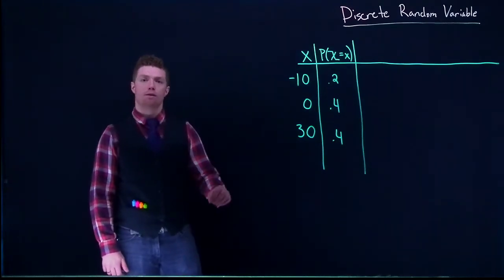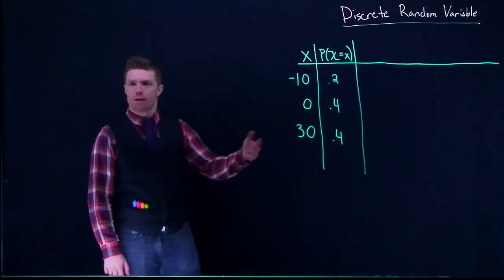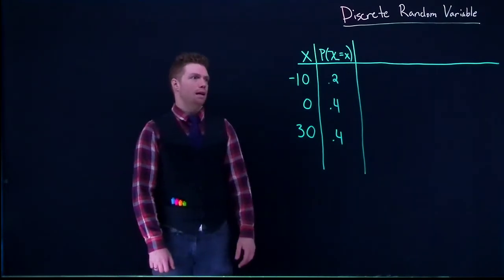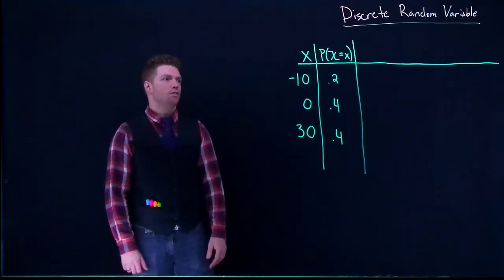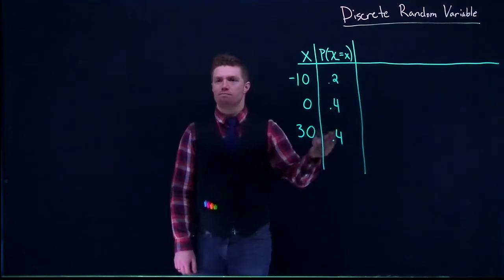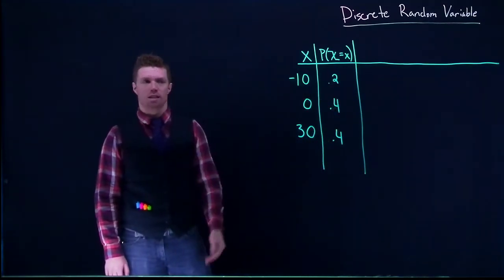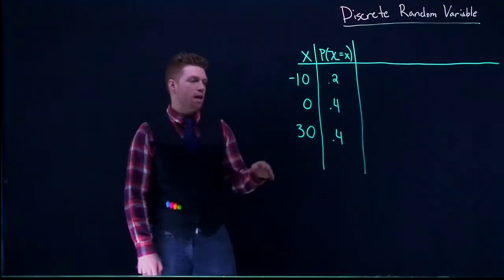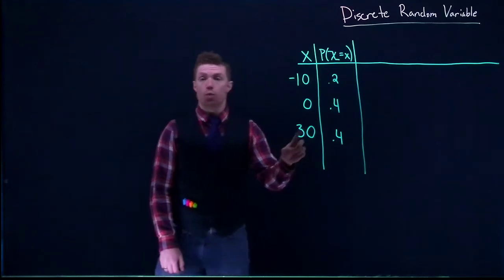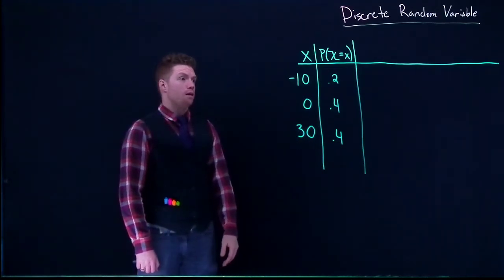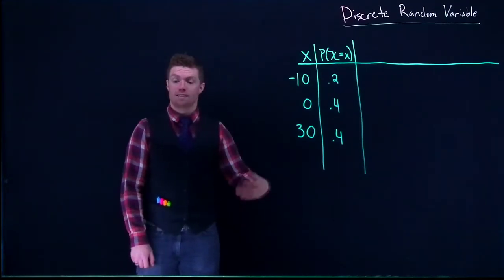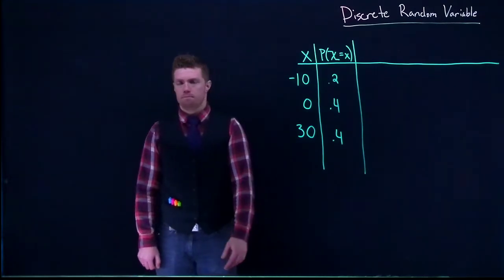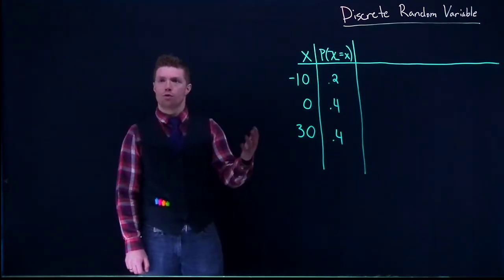Let's talk about another application of discrete random variables outside of just rolling dice. Suppose your buddy asks you to play a game of chance: 20% of the time you lose $10, 40% of the time you don't win or lose any money, and 40% of the time you win $30. We should ask questions like: on average how much money would you make, should you play this game, and what's the variance and standard deviation?